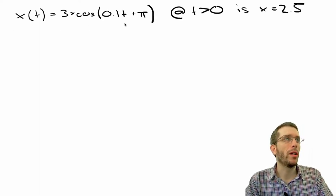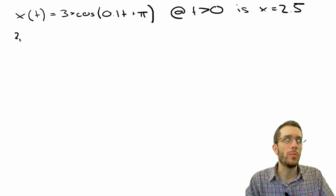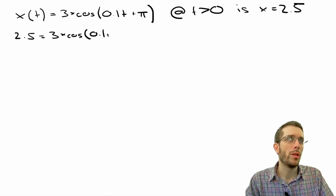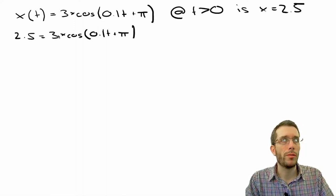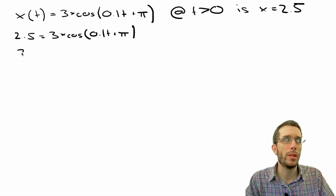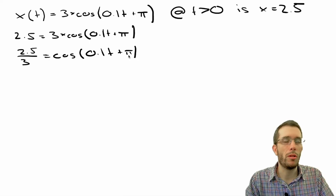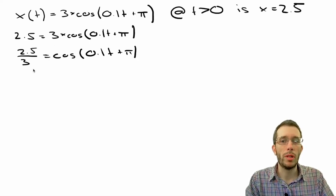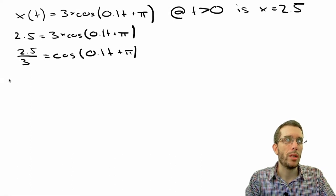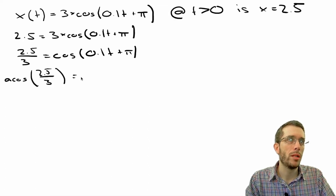So you might have started solving this thinking, okay, this is easy. All I have to do is plug in, right, 2.5 is equal to 3 times cosine 0.1t plus pi. Then you went on and you solved for your time. So we did 2.5 over 3 is cosine of 0.1t plus pi. Then you know if you want to do the inverse of cosine, you have to do the arcosine on the other side. So we have arcosine 2.5 over 3 is 0.1t plus pi.